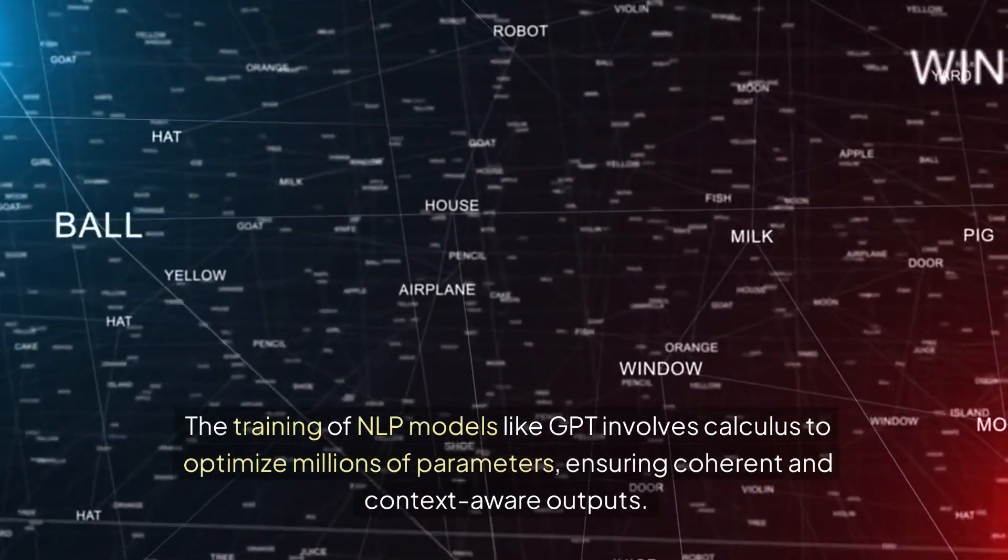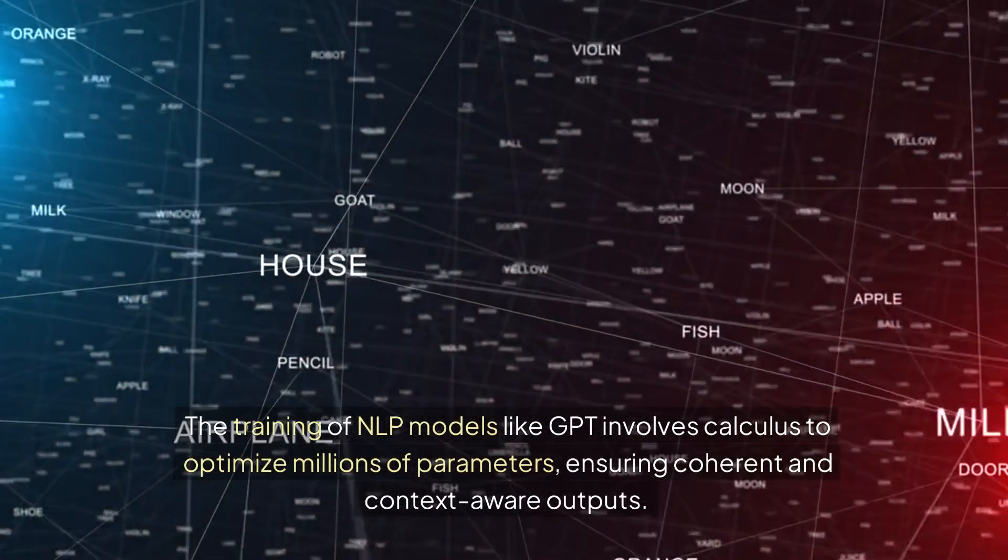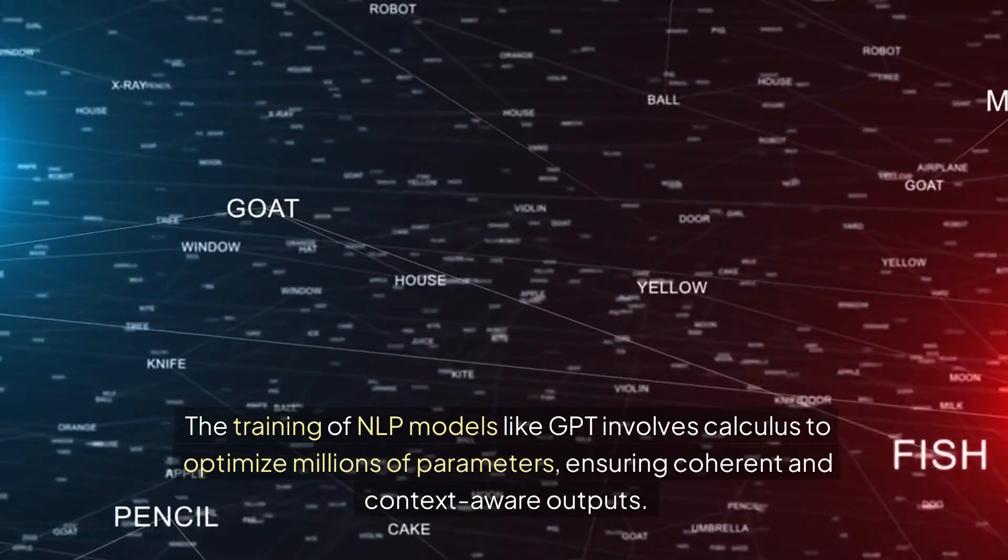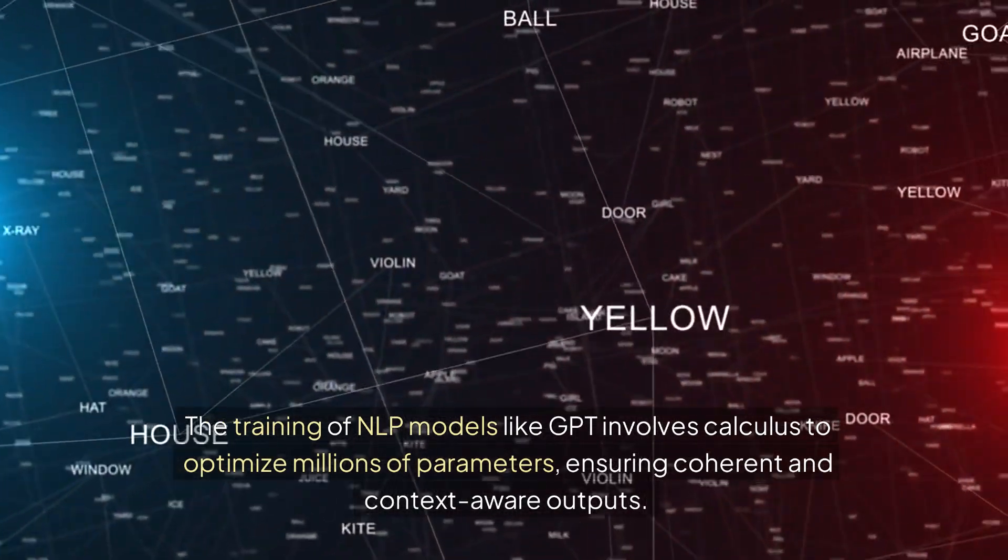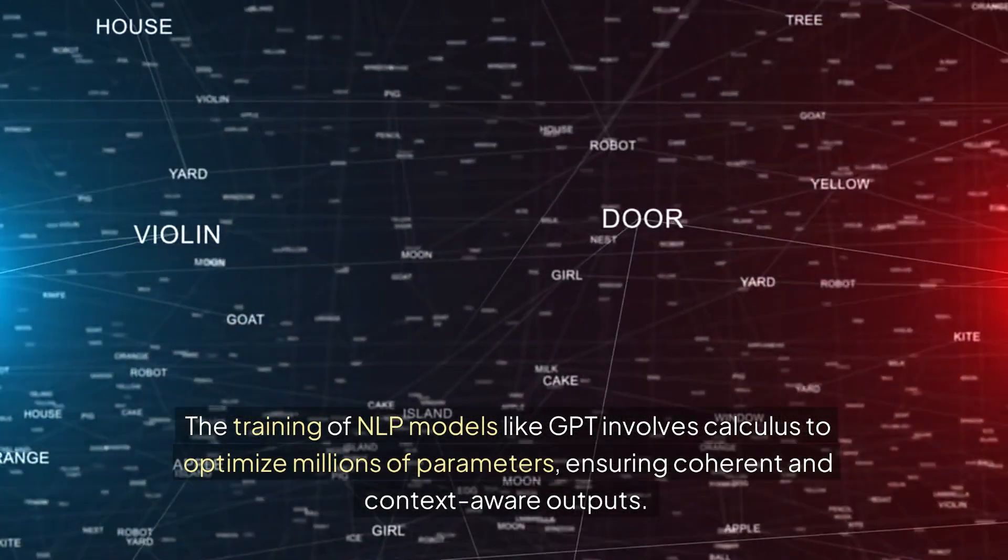The training of NLP models like GPT involves calculus to optimize millions of parameters, ensuring coherent and context-aware outputs.